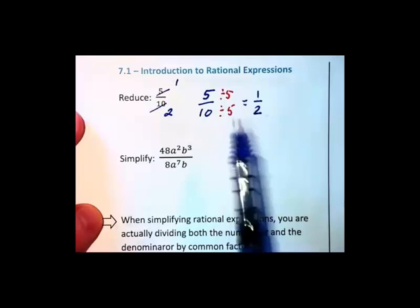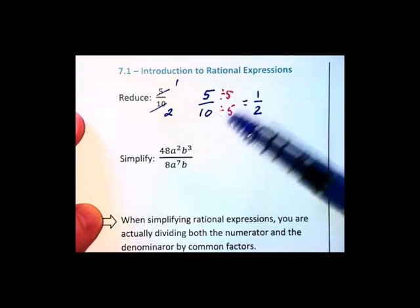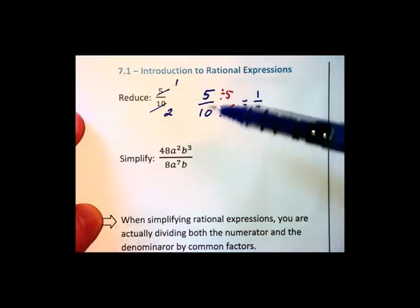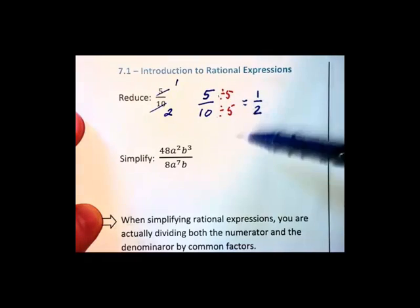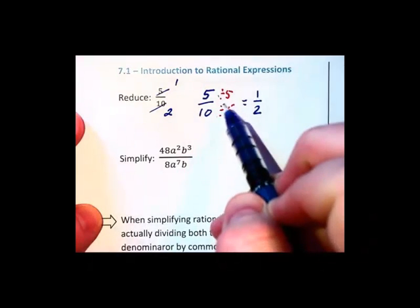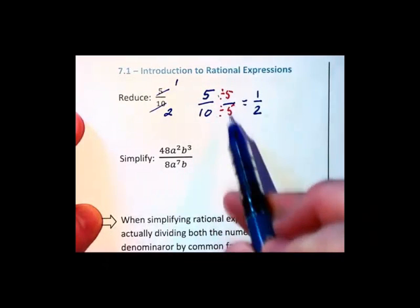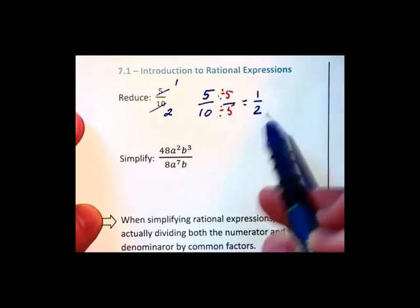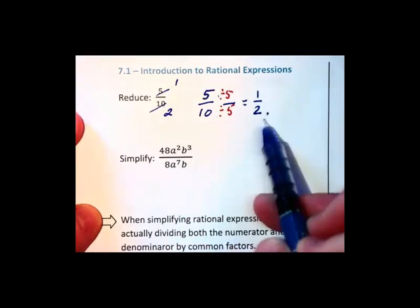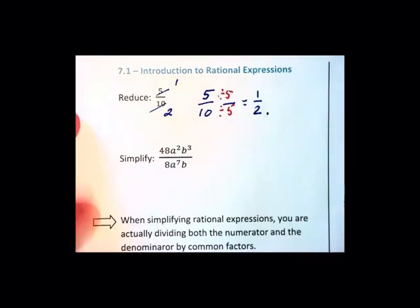We're asking what is the greatest common factor of 5 and 10, and we're dividing that out of each. Notice that 5 over 5 really is a 1, and dividing by 1 gets you to an equivalent expression. 1/2 is equivalent to that 5/10.